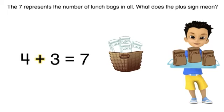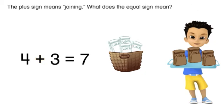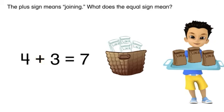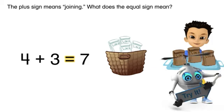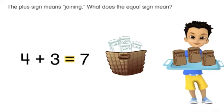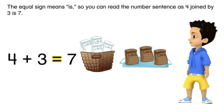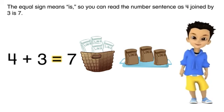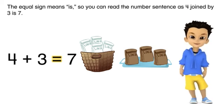What does the plus sign mean? The plus sign means joining. What does the equal sign mean? The equal sign means is. So you can read the number sentence as four joined by three is seven.